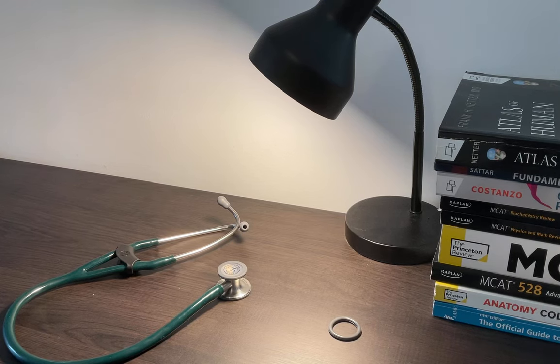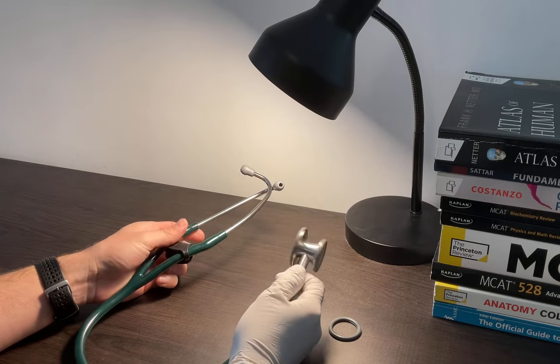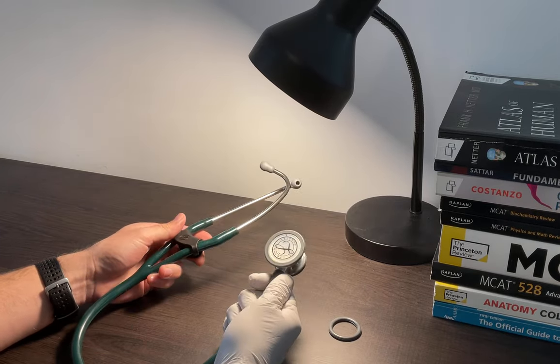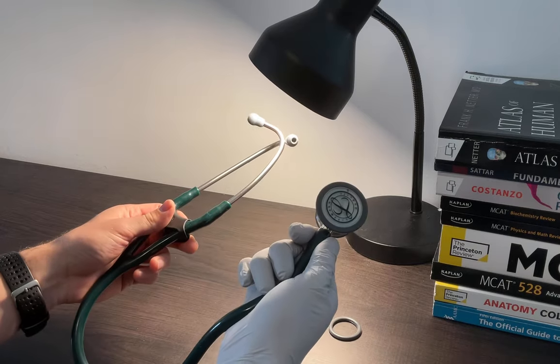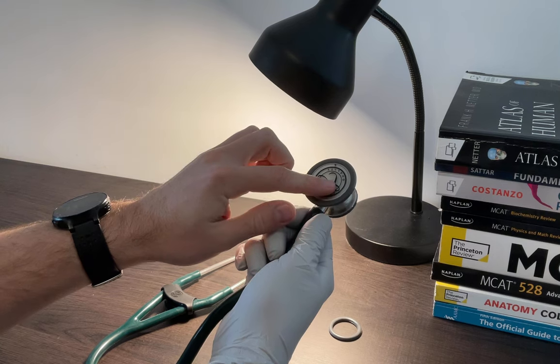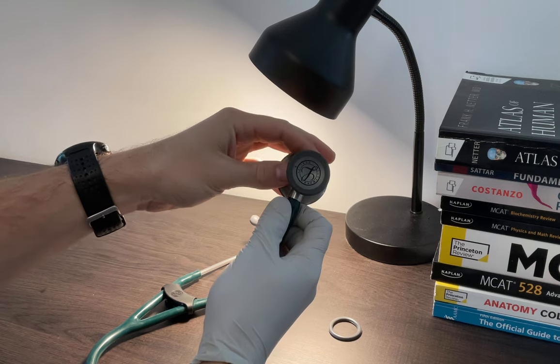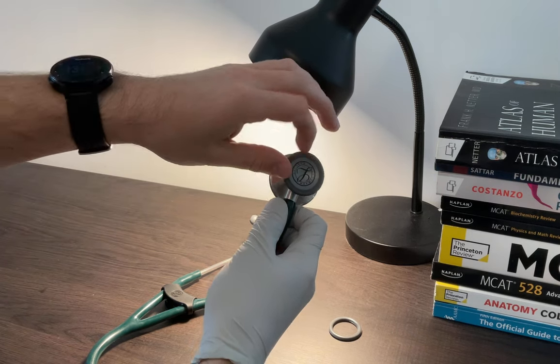How's it going everyone, today I just wanted to make a quick video about what the bell and a diaphragm is on a stethoscope. So when you unbox a stethoscope like this, this is a Littmann right here, we have the adult diaphragm and on the back we have the pediatric diaphragm.